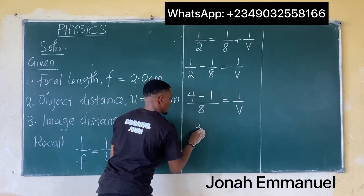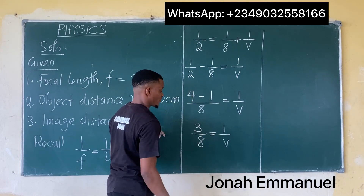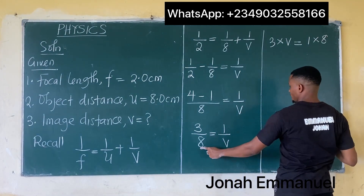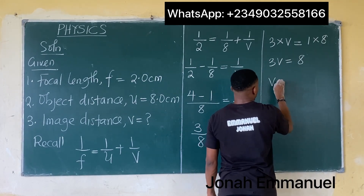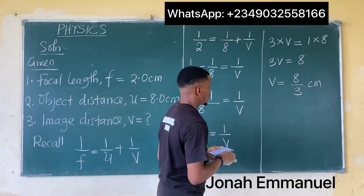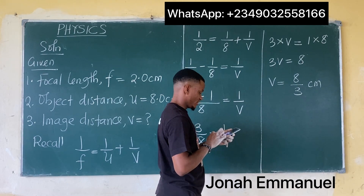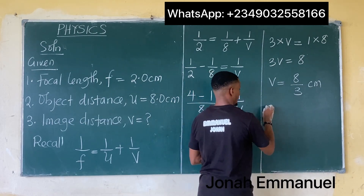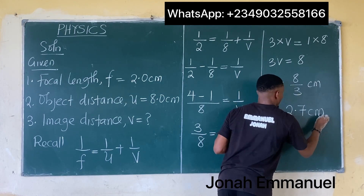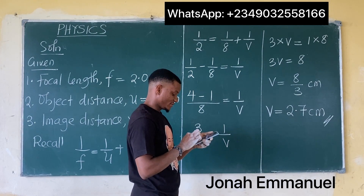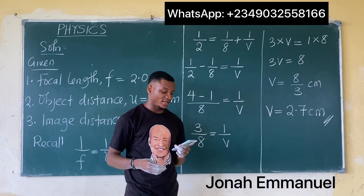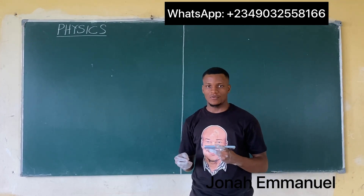So 4 minus 1 gives 3 over 8 equals 1 over v. Cross multiplying: 3v equals 8, so v equals 8 over 3 centimeters. Punching that into a calculator, 8 over 3 gives 2.666, which is approximately 2.7 centimeters. So the image is at 2.7 centimeters, which is option D.